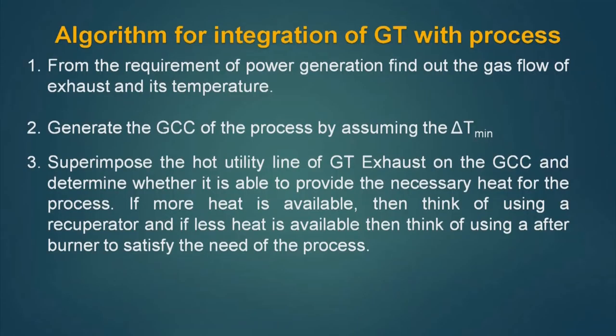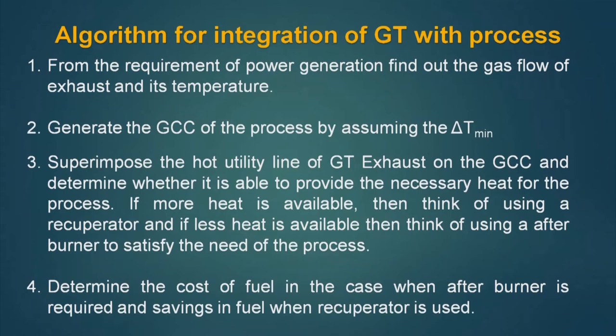Number three: superimpose the hot utility line of GT exhaust on the GCC and determine whether it is able to provide the necessary heat for the process. If less heat is available, think of using an afterburner to satisfy the need of the process. Fourth point: determine the cost of fuel in the case when an afterburner is required and savings in fuel when a recuperator is used. All our decisions will be based on economic analysis using the TAC — total annual cost — of the integrated system, and we will select the system which gives us the best profit.